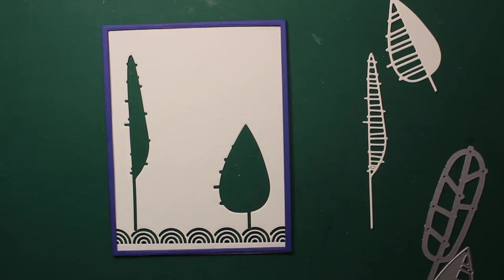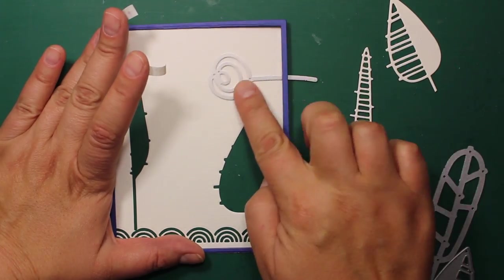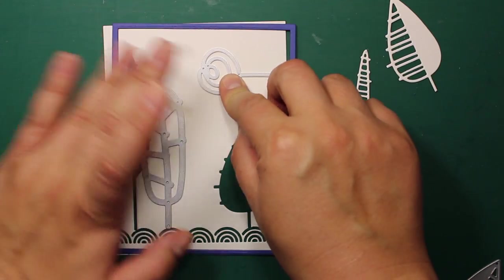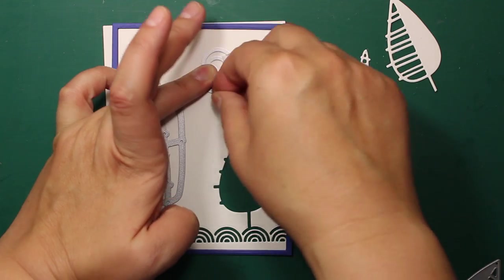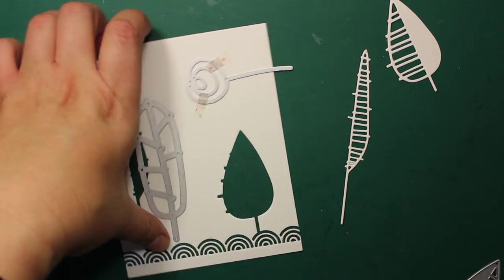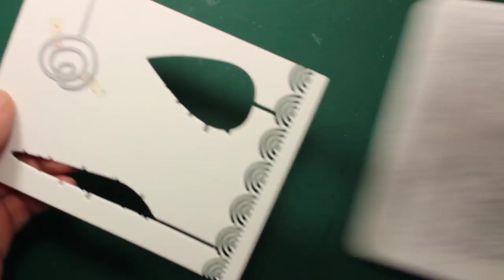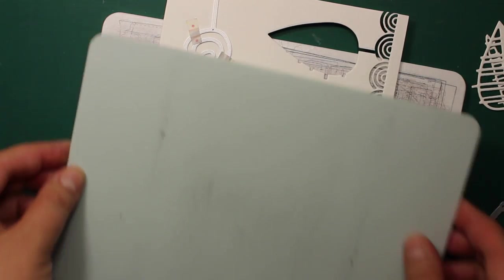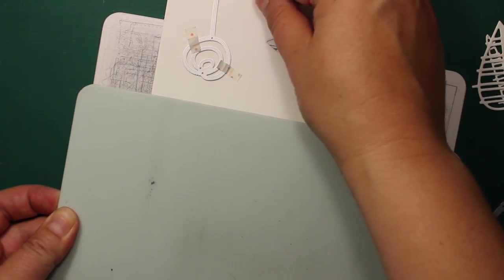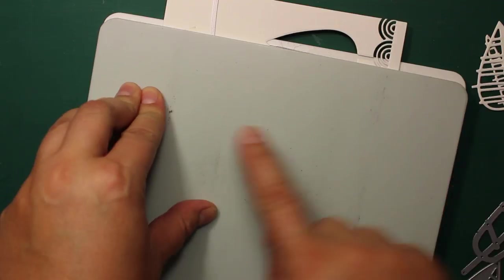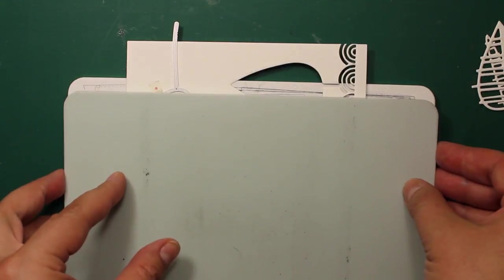The next element I'm going to cut is a lollipop or in my case it's the sun. I only need to die cut the circle and not the stem and that's why I'm going to position this circle between the cutting plates and leave the stem hanging off the edge of the plate. I'm going to run it through the machine like this and this way only the circle will be die cut.